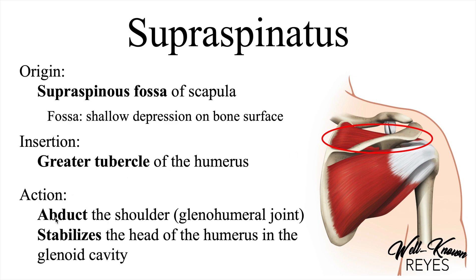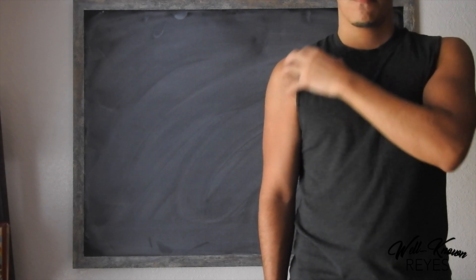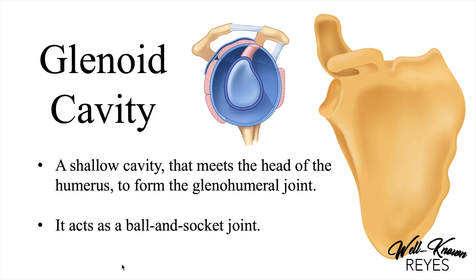The supraspinatus actions are to abduct the shoulder at the glenohumeral joint, and it also stabilizes the head of the humerus in the glenoid cavity. The glenoid cavity is a shallow cavity that meets the head of the humerus to form the glenohumeral joint. The head of the humerus meets this cavity — glenoid cavity and humerus making the glenohumeral joint.